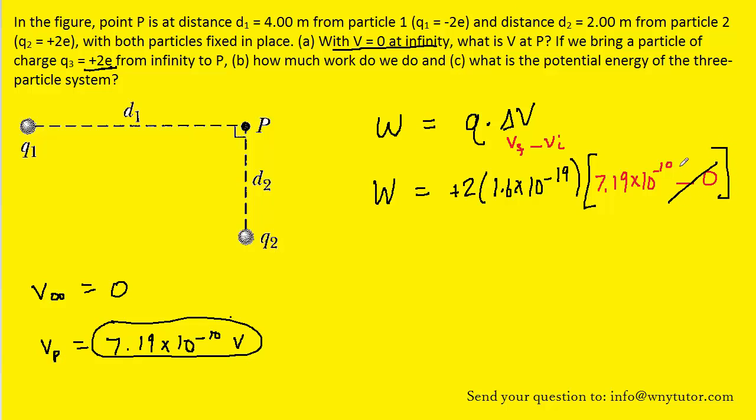Of course we can omit the minus 0 part, and then we can pick up our calculator and determine this quantity. And we should end up with about 2.30 times 10 to the minus 28. And the standard unit of work is joules. So this is the correct answer to part B.